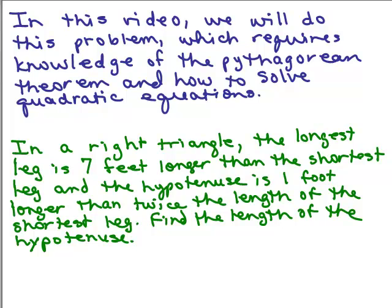So this is our problem. In a right triangle, the longest leg is seven feet longer than the shortest leg, and the hypotenuse is one foot longer than twice the length of the shortest leg. Find the length of the hypotenuse.